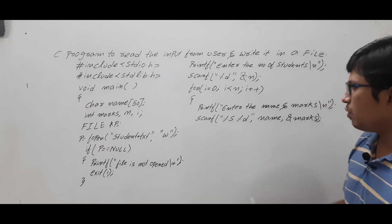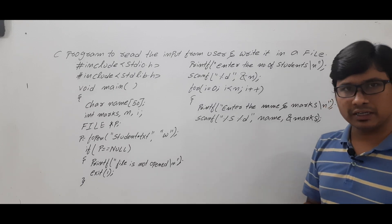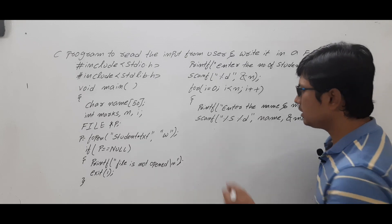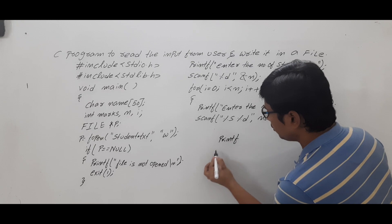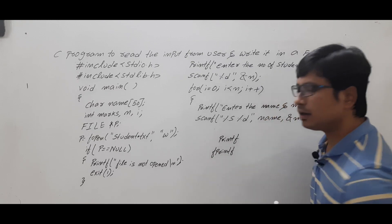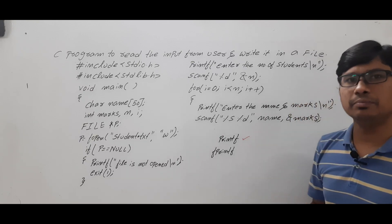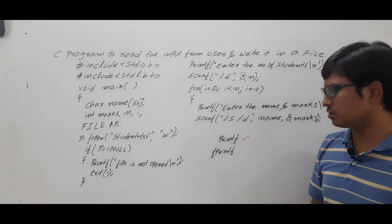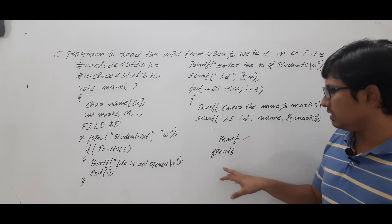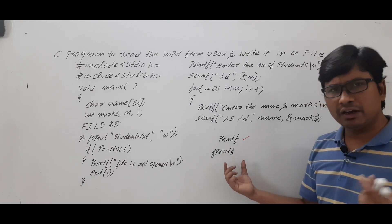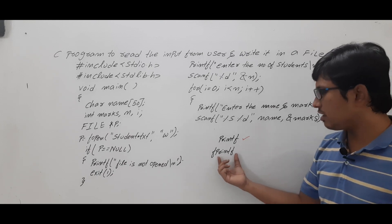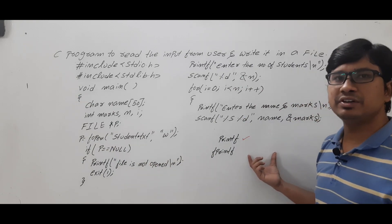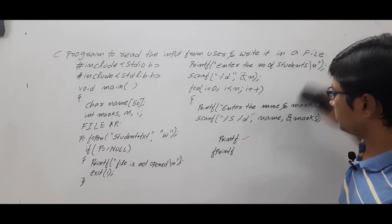Once the user has entered the name and marks of a student, I want to store that information into the file student.txt. For this I use a function called fprintf. Until now you would have seen printf, which prints to the console. If the same information needs to be saved into a file, I use fprintf. This function takes three arguments: the file pointer indicating which file to write to, the format specifiers, and the variables.